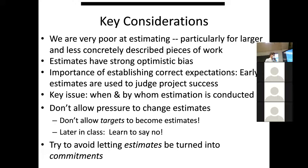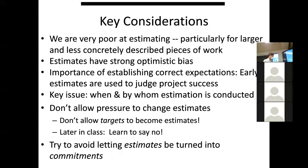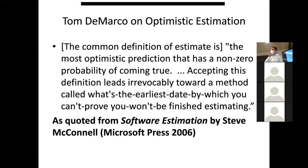A key issue is that project success is judged by estimates, and if estimates are not given by the team but imposed by managers, you're often in trouble. Sometimes managers take targets — things you aspired to — and turn them into estimates, saying 'You estimated you would get this done by Christmas.' No — it was something you aspired to, not an estimate of how long it would take. You have to be willing to say no, and tell people: I wish it were the case, but it's just not going to be possible.